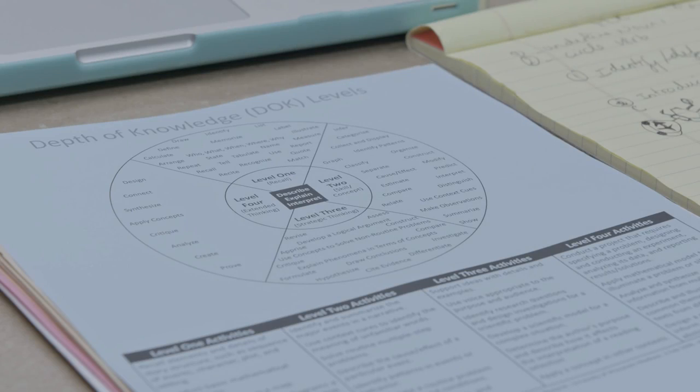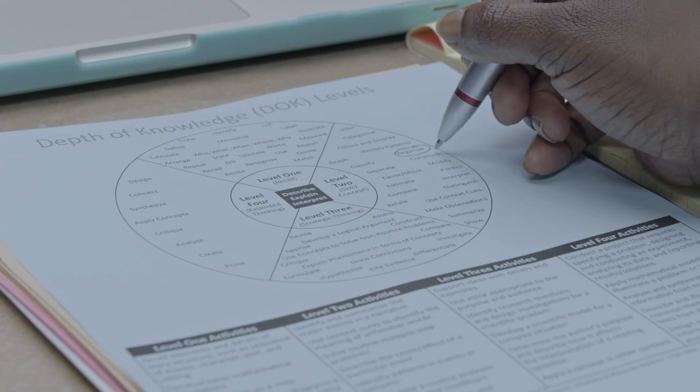The group discusses creating student-friendly learning objectives and considers the Depth of Knowledge (DOK) levels. One teacher explains that 'introduce a topic' means bringing the topic in any way that helps students understand it right away, and then organizing ideas within that topic. The group debates whether introducing is level one or two — suggesting that the who, what, where, and why might be level one, while summarizing and organizing would be level two.